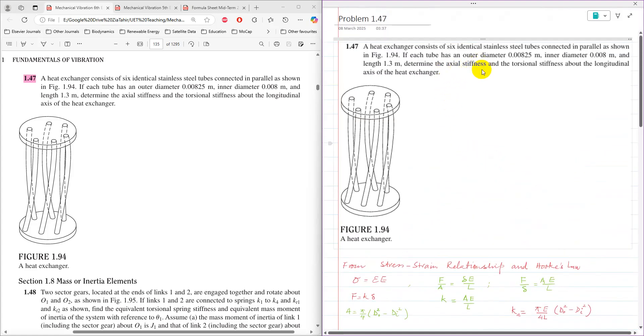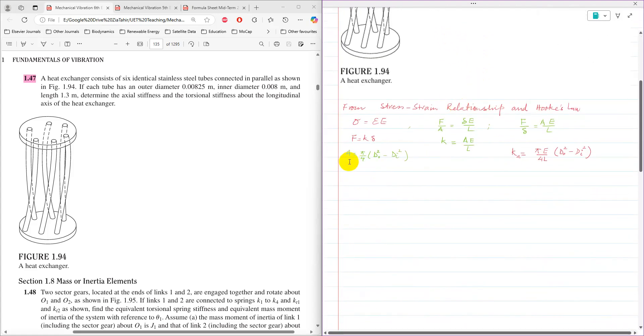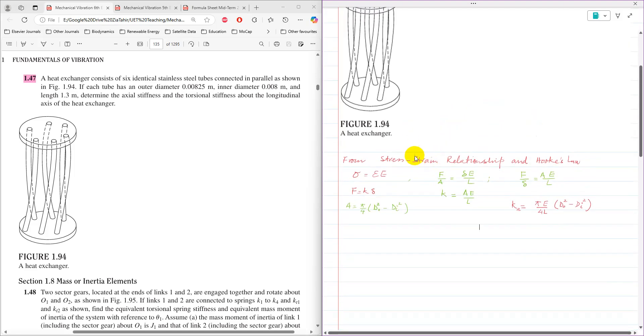Because these tubes are hollow tube, for hollow tube area of cross section is pi by 4, D_O squared minus D_I squared. Then the expression for axial stiffness becomes pi E over 4L times D_O squared minus D_I squared.